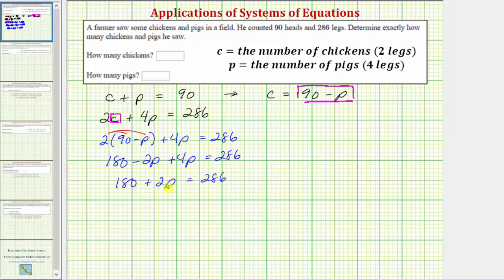Next step, isolate the p term. So we'll subtract 180 on both sides. Simplifying, we have 2p equals 286 minus 180 is 106. Divide both sides by 2 to solve for p.